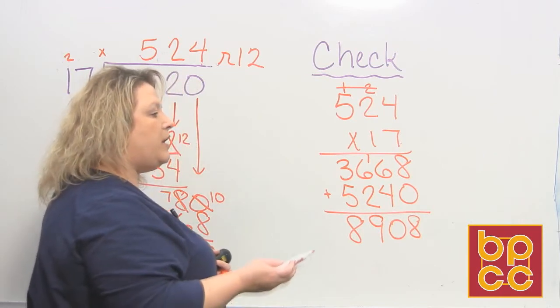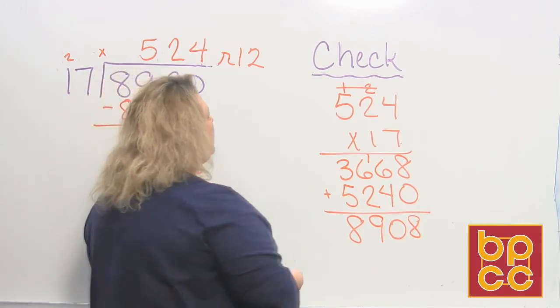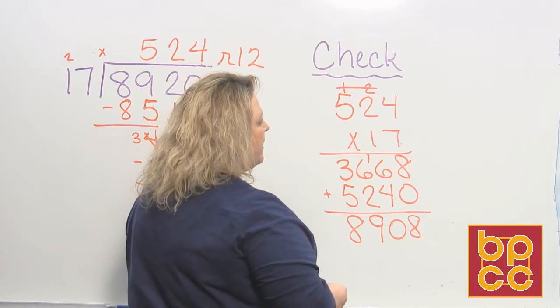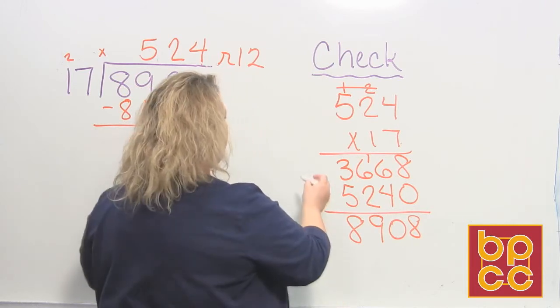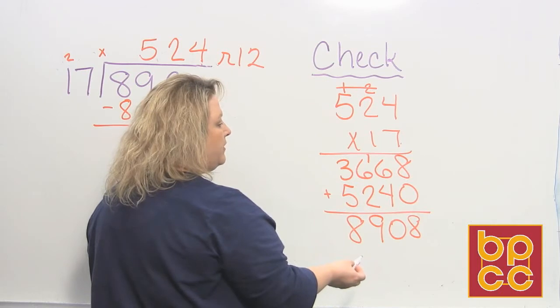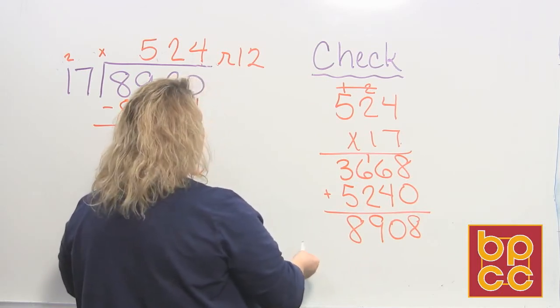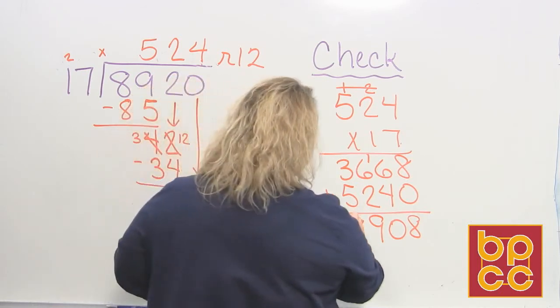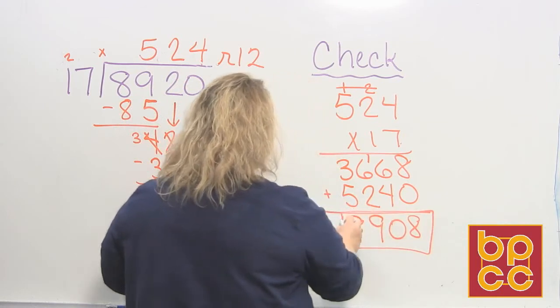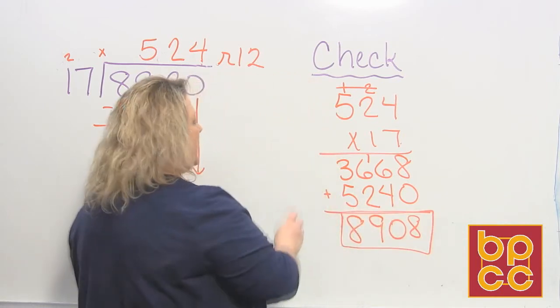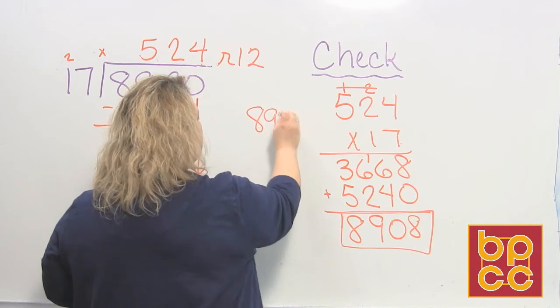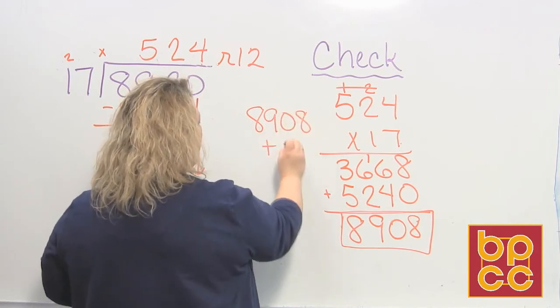Now, I'm pretty close to 8,920, but I still have my remainder. So to get your remainder and see if it's actually the answer, you want to take your remainder 12 and you want to add it to this total that I just got. So I'm going to do that right here in this small space. I have 8,908. And I'm going to add my remainder.